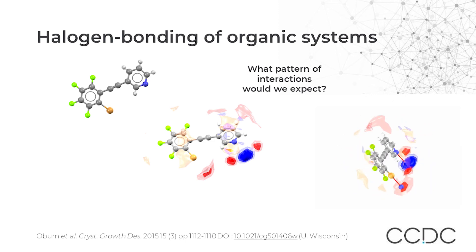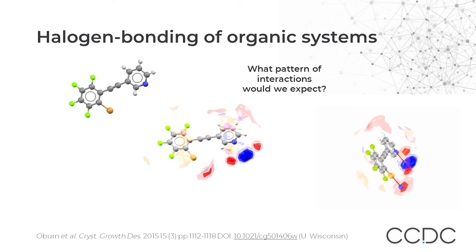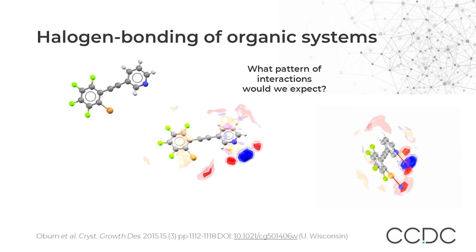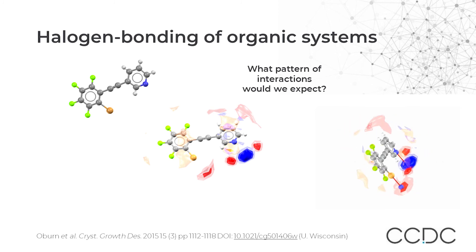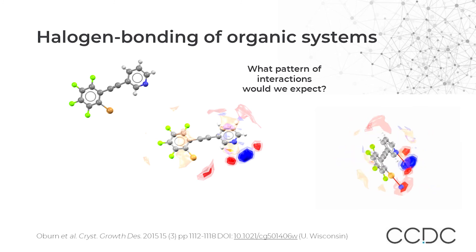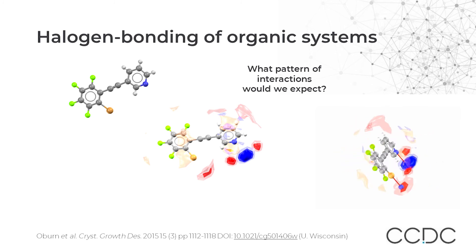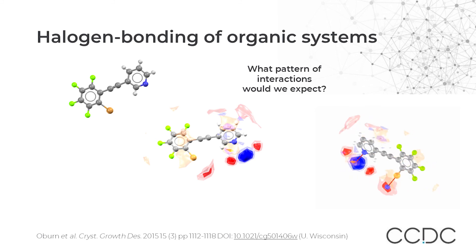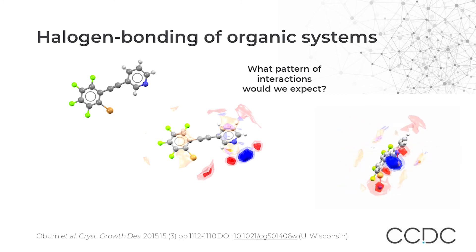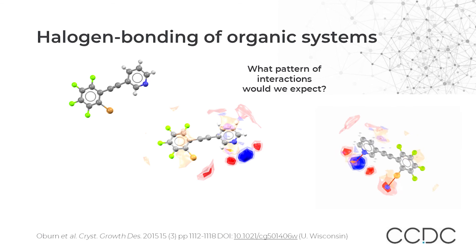Just like other types of intermolecular interactions such as hydrogen bonding, FIMs can be applied to halogen bonding. On this slide, we see a molecule that has a halogen bonding ability, and by looking at the interaction maps, it is obvious that this molecule is a self-complementary molecule by nature. That is one of the closest applications to the topic being discussed in that specific forum.